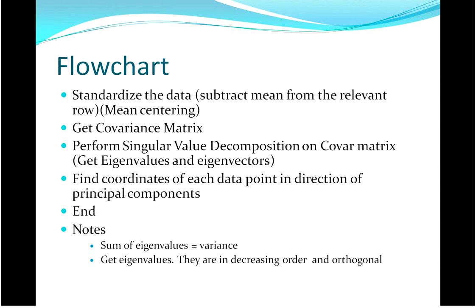We'll explain some of the terminology later on. We standardise the data. In other words, subtract the mean from the relevant row, or mean centering. You get the covariance matrix. You perform SVD singular value decomposition, and the covariance matrix that you formed. You dig out the eigenvalues and eigenvectors from that.